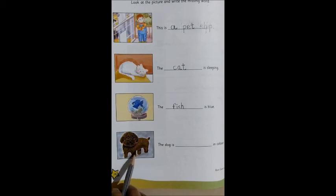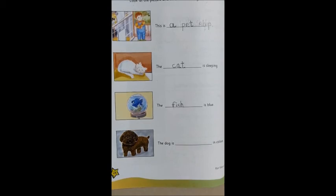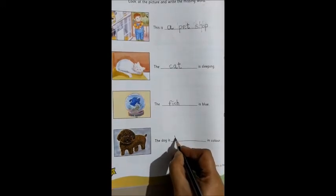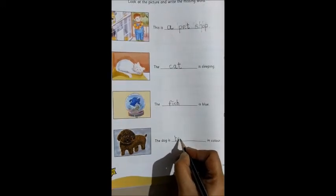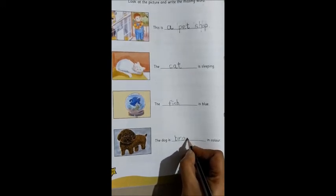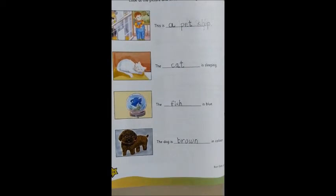The next one. The last one. The dog is dash in color. So, what is the color of the dog? Right. Very good. Brown. So, what will you write? Brown. So, a B, R, O, W, and N. Brown.